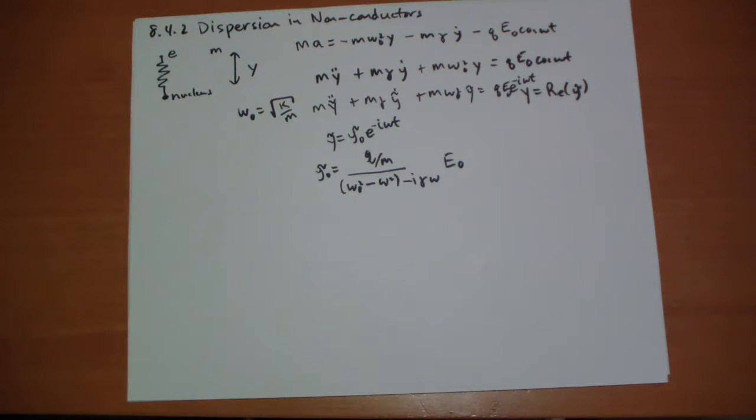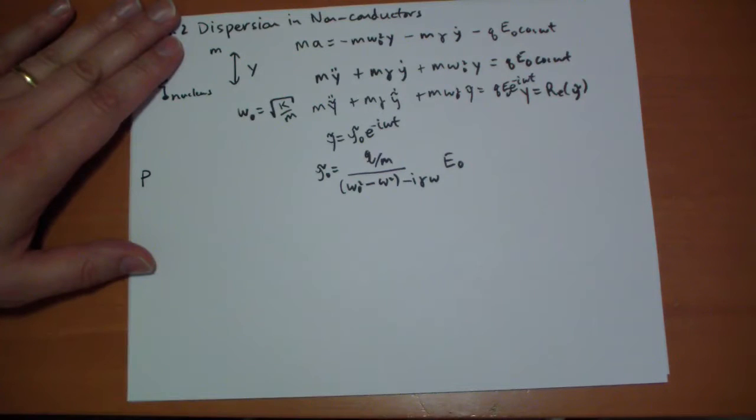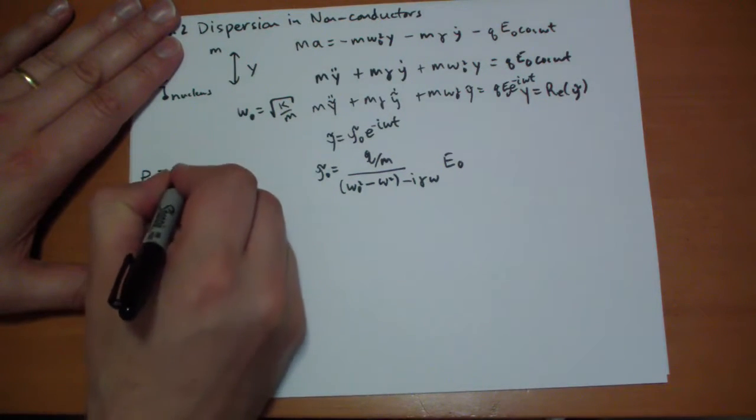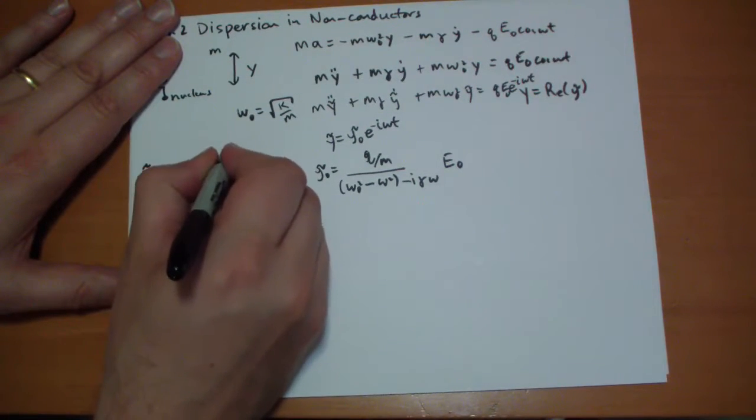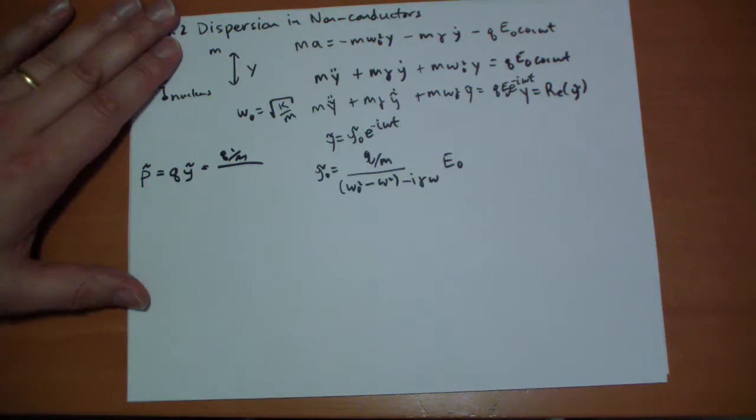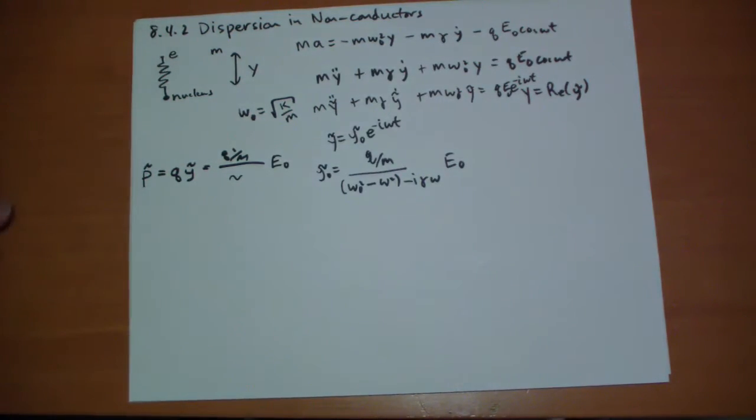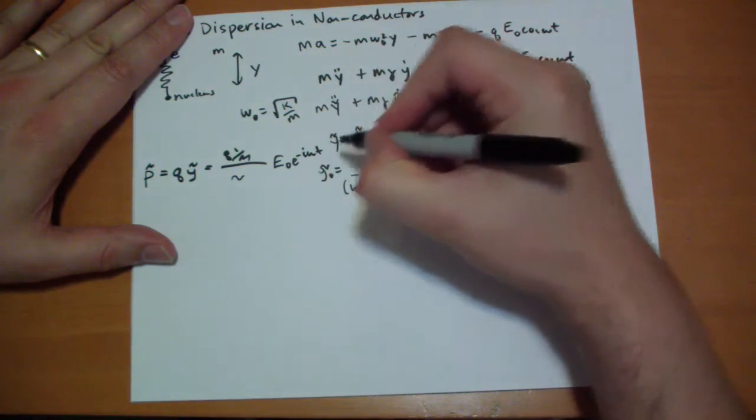The dipole moment P, not the momentum but the dipole moment P, has to equal Q times Y. These are complex. P is complex. The real of P complex is the actual dipole moment. That's just Q squared over M and that mess times E naught E to the minus I omega T.